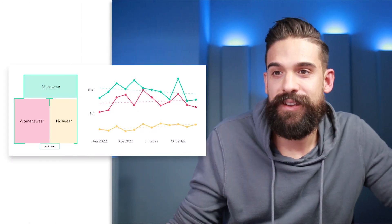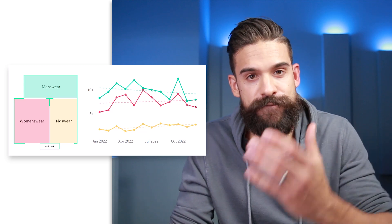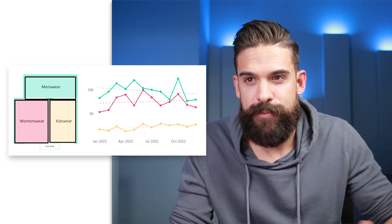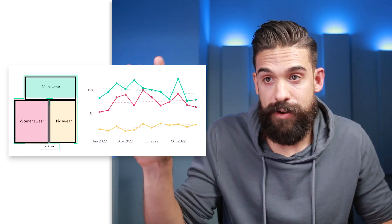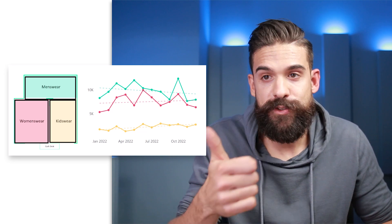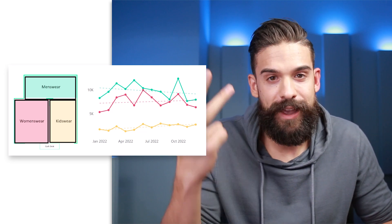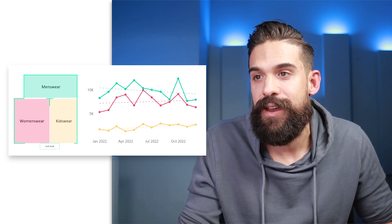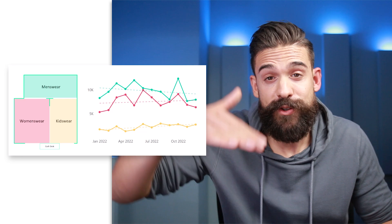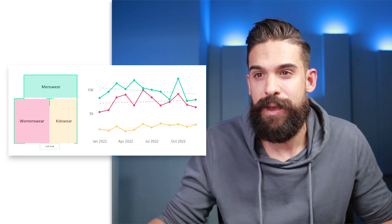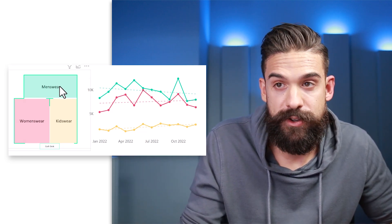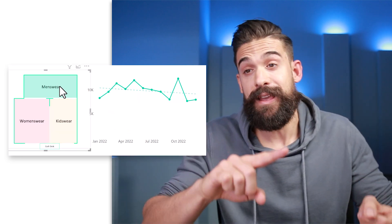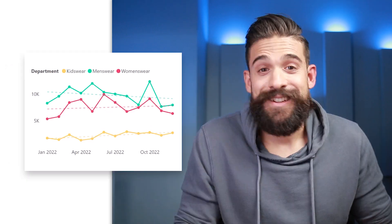The example we're going to recreate has a floor map for a department store, visualizing every department in a different color — we have menswear, womenswear, and kidswear. Right next to it, there's a line chart that shows the sales over time. By selecting one of the departments, for example menswear, you see it filters the other visual.